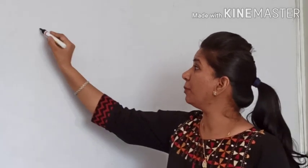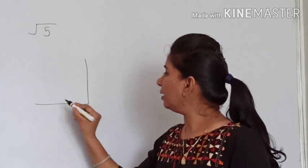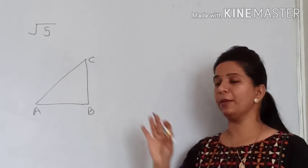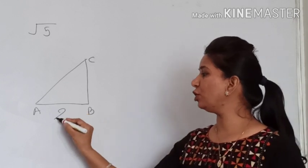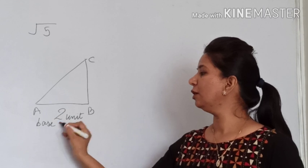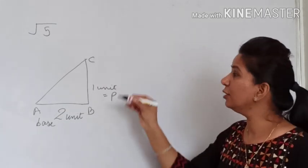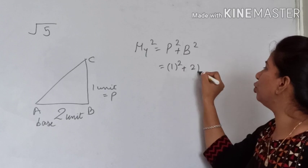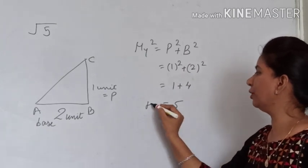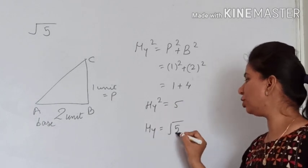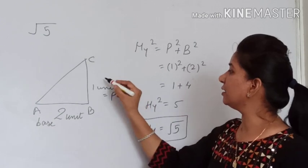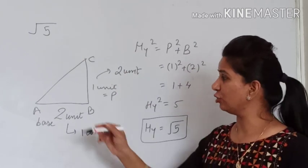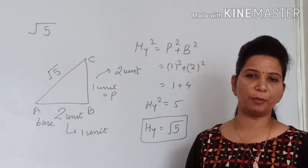Now for representing root 5 on the number line: if you think about a right angle triangle with perpendicular 1 unit and base 2 units, then hypotenuse squared equals 1 squared plus 2 squared equals 1 plus 4 equals 5, so hypotenuse equals root 5.